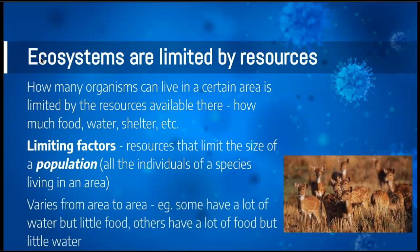That's going to vary from area to area. In some areas you're going to have a lot of water available but not very much food, so the food would be a limiting factor. In other areas you're going to have a lot of food but not very much water, so water would be a limiting factor. Those things that will limit how big a population can get — those resources — are called limiting factors and they are naturally occurring.